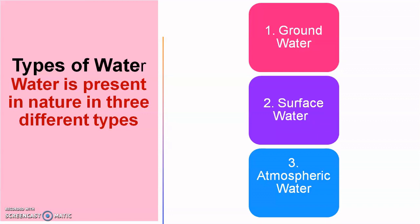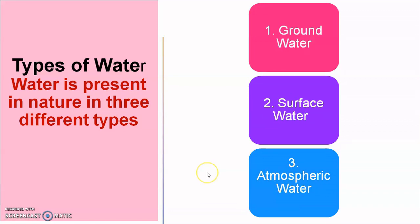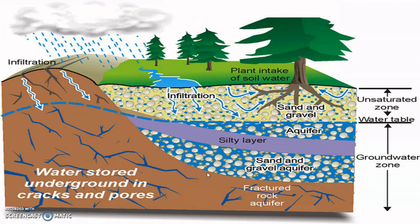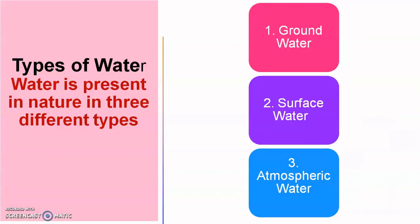Now the next point is types of water. Water is present in nature in three different types: the first is groundwater, the second is surface water, and the third is atmospheric water. We will see each one by one.